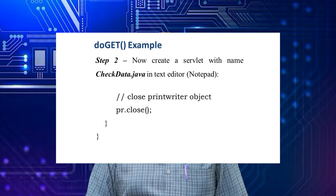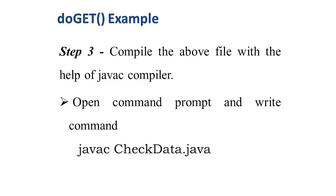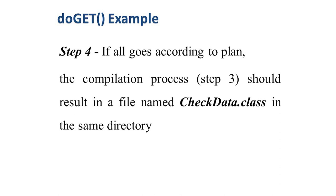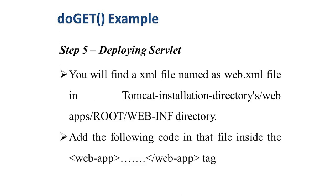Finally, close the PrintWriter object with pr.close. To compile the file, open the command prompt and run the command javac checkdata.java, which compiles and converts it into a class file. If all goes well, the compilation should produce a file named checkdata.class in the same directory. For deploying the servlet, put checkdata.class into the Tomcat installation directory slash webapps slash ROOT slash WEB-INF slash classes directory, and put home.html into the ROOT directory at Tomcat installation directory slash webapps slash ROOT. You will find web.xml in the WEB-INF directory; add the following code inside the webapp tag.